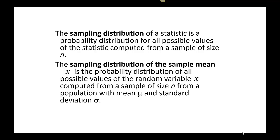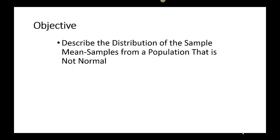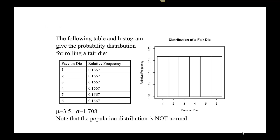However, what if the distribution is not originally normal? We cannot use the z-table. As such, we have to find a way to be able to use the normal distribution. So what we want to do is describe the distribution of the sample means, or the sample X-bars, from a population that is not normal and see what we can find from this distribution and how we can use it.